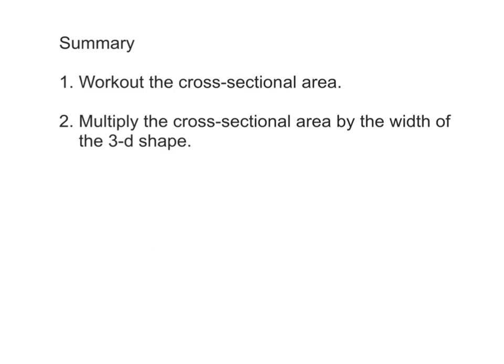Just to summarise: to work out the volume of a compound 3D shape, all you need to do is first work out the cross-sectional area of the shape, and then multiply the cross-sectional area by the width of the 3D shape — and that gives you the volume.